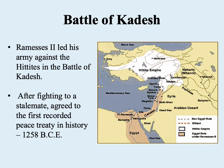One very interesting development during the reign of Ramses II: we have evidence of the first recorded peace treaty in history, in 1258 BCE. This was when Ramses II led his army against the Hittites from the north in the Battle of Kadesh, which basically ended up a stalemate. Kadesh is located in what roughly corresponds to modern-day Israel-Palestine. It was a draw, and it resulted in a peace treaty where they basically divided up the territory between them into respective spheres of influence.